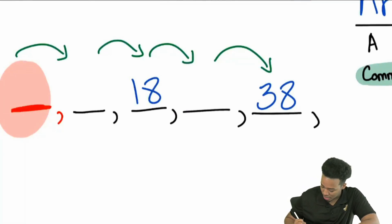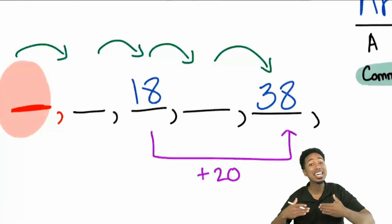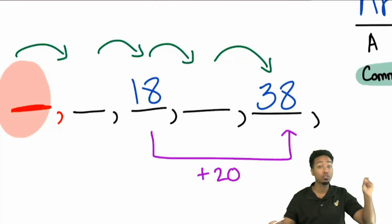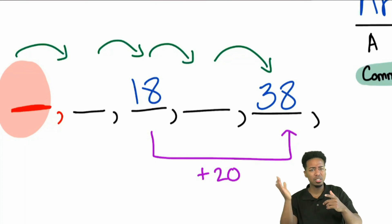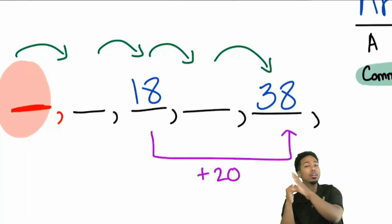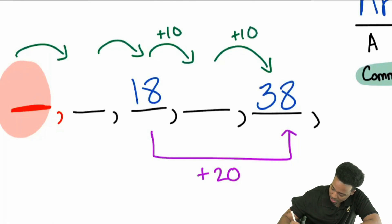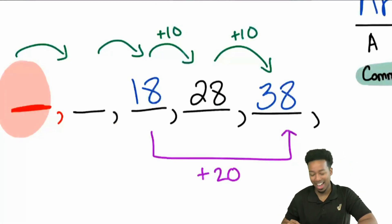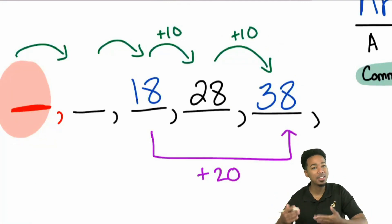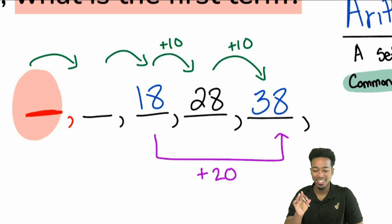To go from 18 to 38 that's plus 20, but we jumped two numbers, not one. Since it's the same amount every time, if we jumped 20 over two steps, that's 20 divided by 2 equals 10. If you're going one number at a time it's half of that — plus 10. So that middle number has to be 28. From 18, add 10: 28. Add 10 again: 38. It fits the pattern.